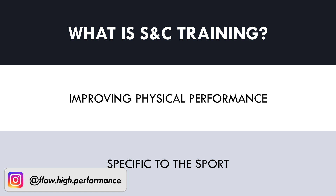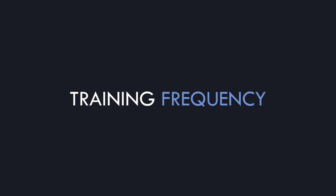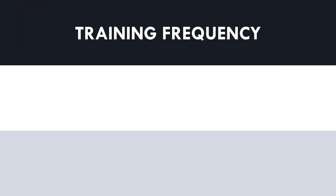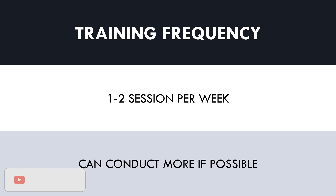The first factor we need to consider when creating a microcycle is training frequency. We need to establish what days the athlete or team has sport practice and what days they will conduct strength and conditioning sessions. Realistically, most athletes would be able to conduct one to two strength and conditioning sessions per week on top of their sport practice. During the off season they may be able to conduct more sessions, although for this video we won't be planning a high frequency training schedule.